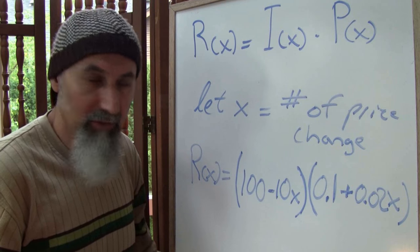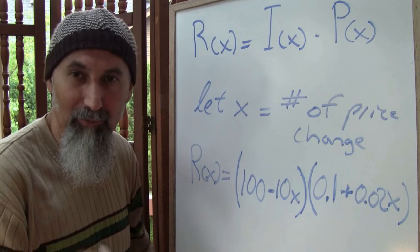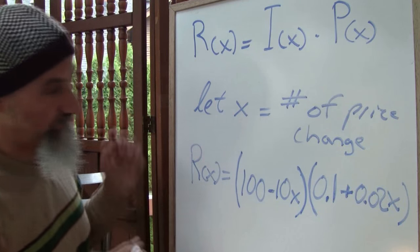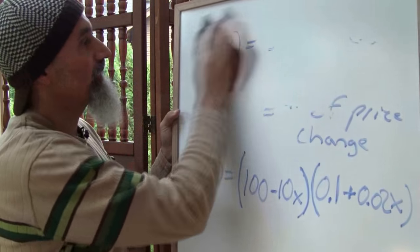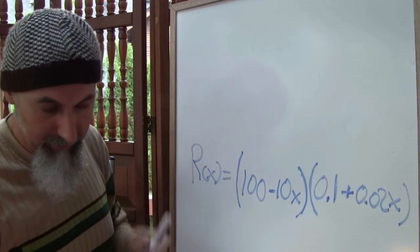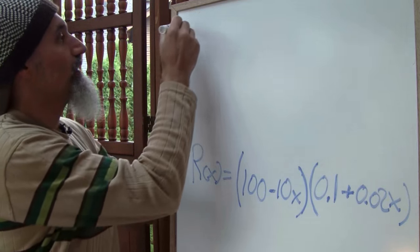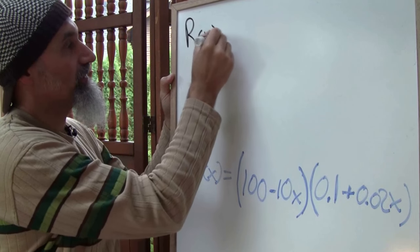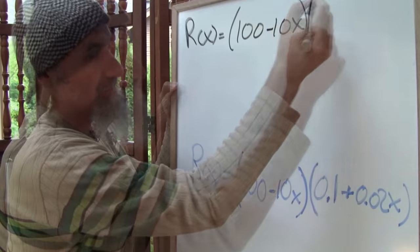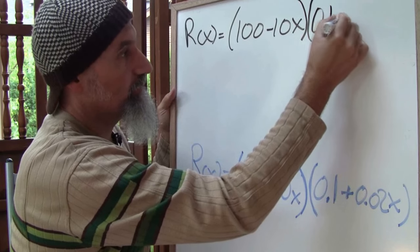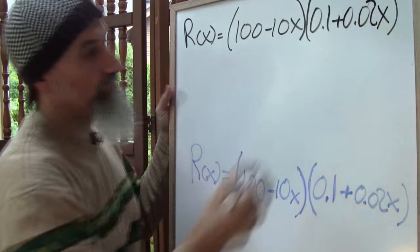To find the maximum price for these little firecrackers, we take R(x) = (100 − 10x)(0.1 + 0.02x). Now we expand this. The result of FOILing gives us: 100 × 0.1 = 10, plus 100 × 0.02x = 2x, minus 10x × 0.1 = x, minus 10x × 0.02x = 0.2x². Combining like terms and rearranging with highest power first: R(x) = −0.2x² + x + 10.